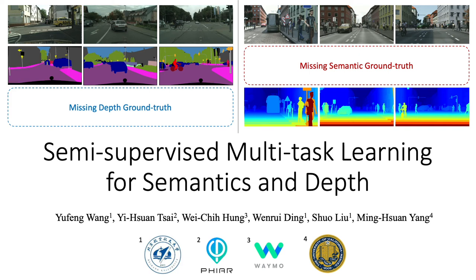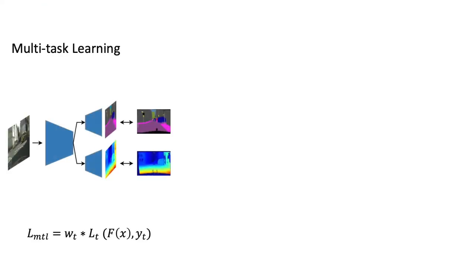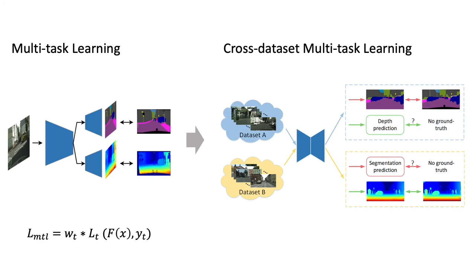In this work, we propose a semi-supervised multitask learning method to expand the multitask setting for training the joint model across different datasets with partial task annotations. Multitask learning aims to enhance model generalization by sharing representations between related tasks for better performance. Typical multitask methods are jointly trained with the complete multitude of ground truths for all tasks simultaneously. However, one single dataset may not contain the annotations for each task of interest.